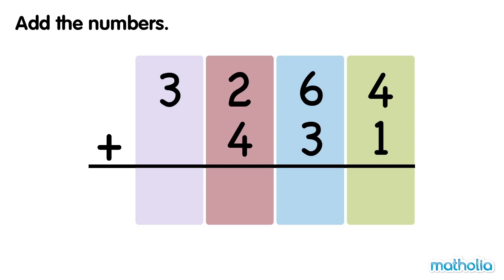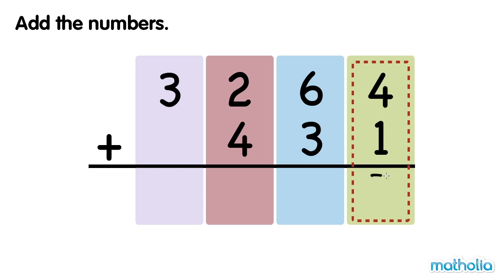Add the numbers. Let's find 3,264 plus 431. Start by adding the ones. 4 ones plus 1 one equals 5 ones.